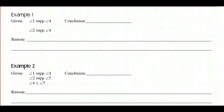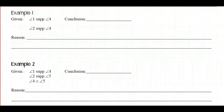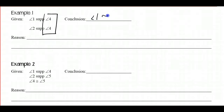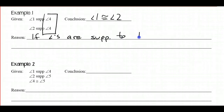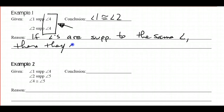We've got a couple of examples. We don't really need pictures for these — if you want to pause the video and try them yourself, go ahead. We're going to write the conclusion and then the theorem that justifies it. For example 1: angle 1 is supplementary to angle 4 and angle 2 is supplementary to angle 4 — they're supplementary to the same angle. Therefore, angle 1 is congruent to angle 2. Theorem: if angles are supplementary to the same angle, they are congruent.